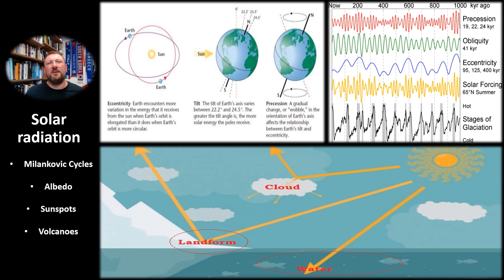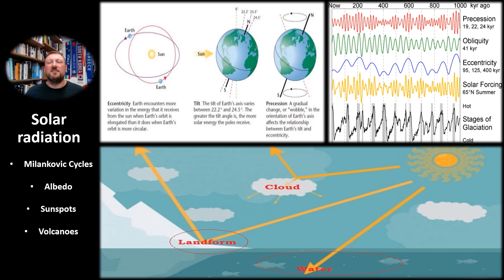Albedo refers to the degree to which solar radiation is reflected from the Earth's surface. Lighter and brighter colored areas like ice, snow, or sand tend to reflect more radiation, while darker areas like ocean and forests tend to absorb more radiation and thus trap more heat. Generally, albedo is higher when the planet is colder because there's more snow and ice cover.